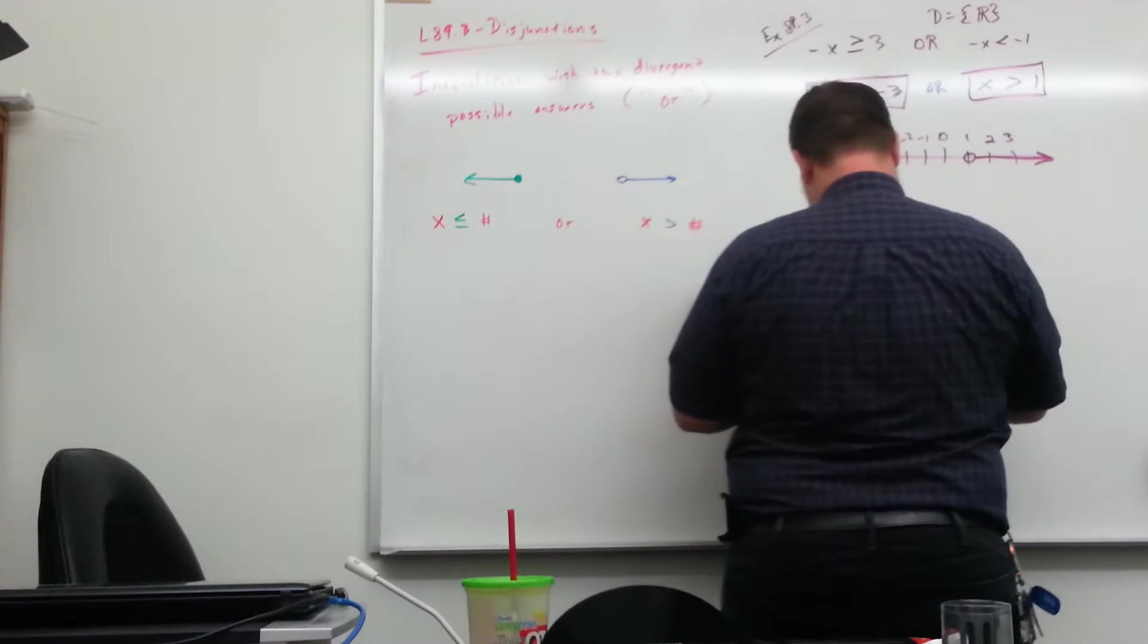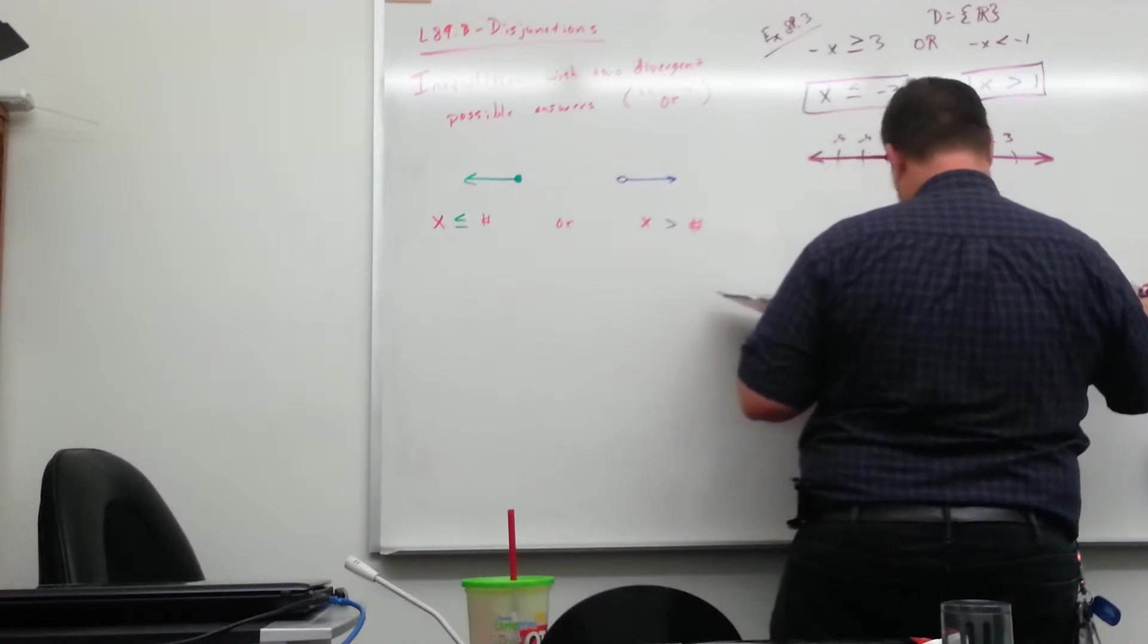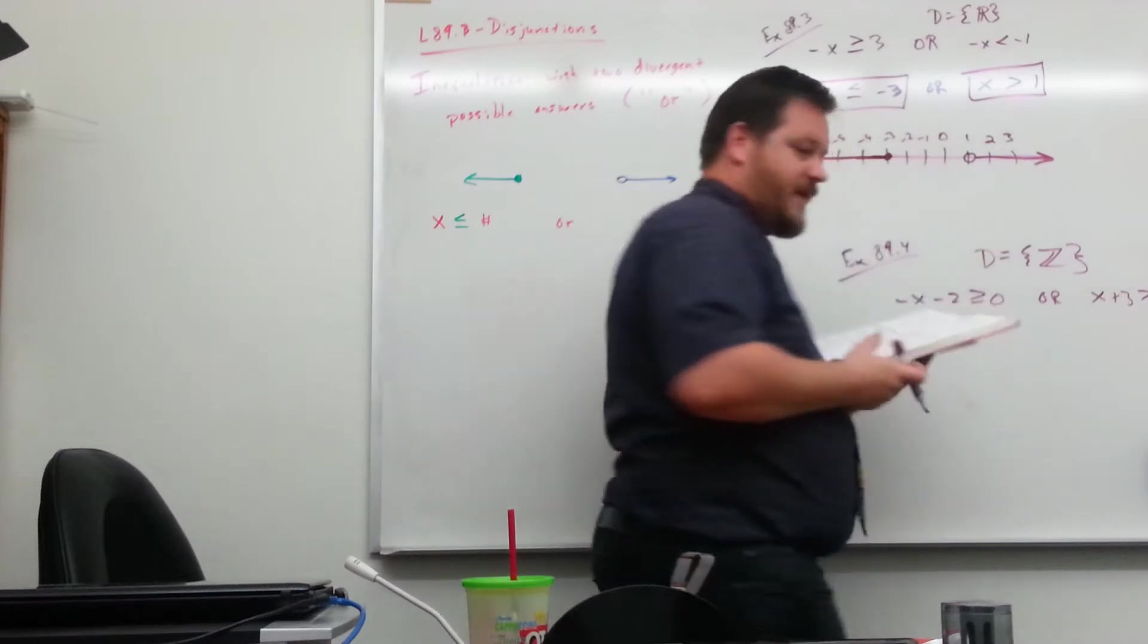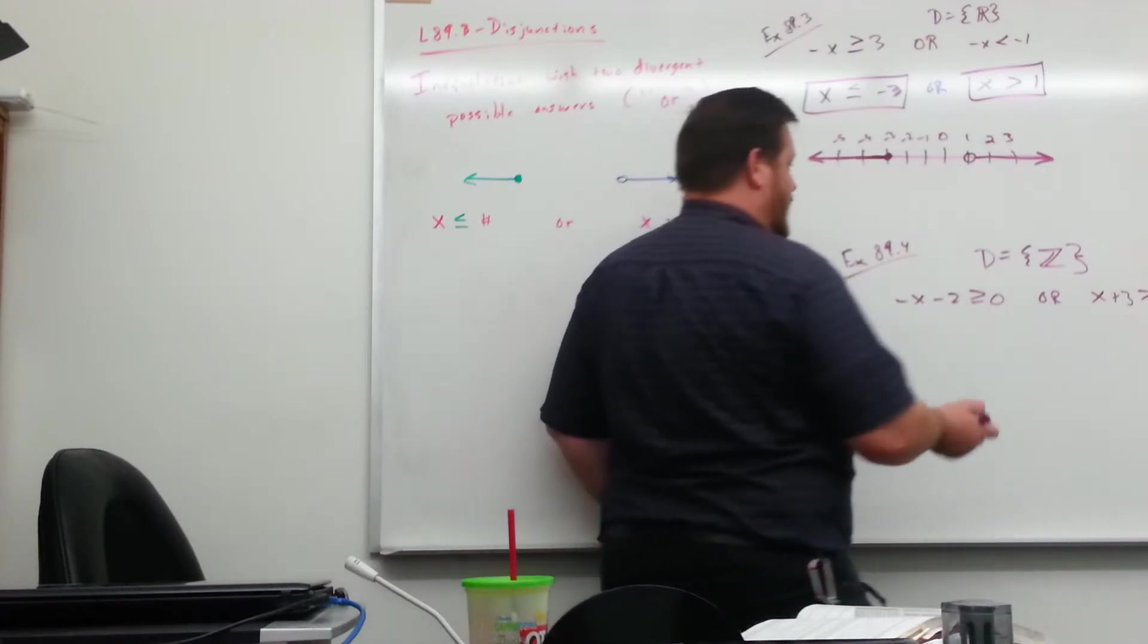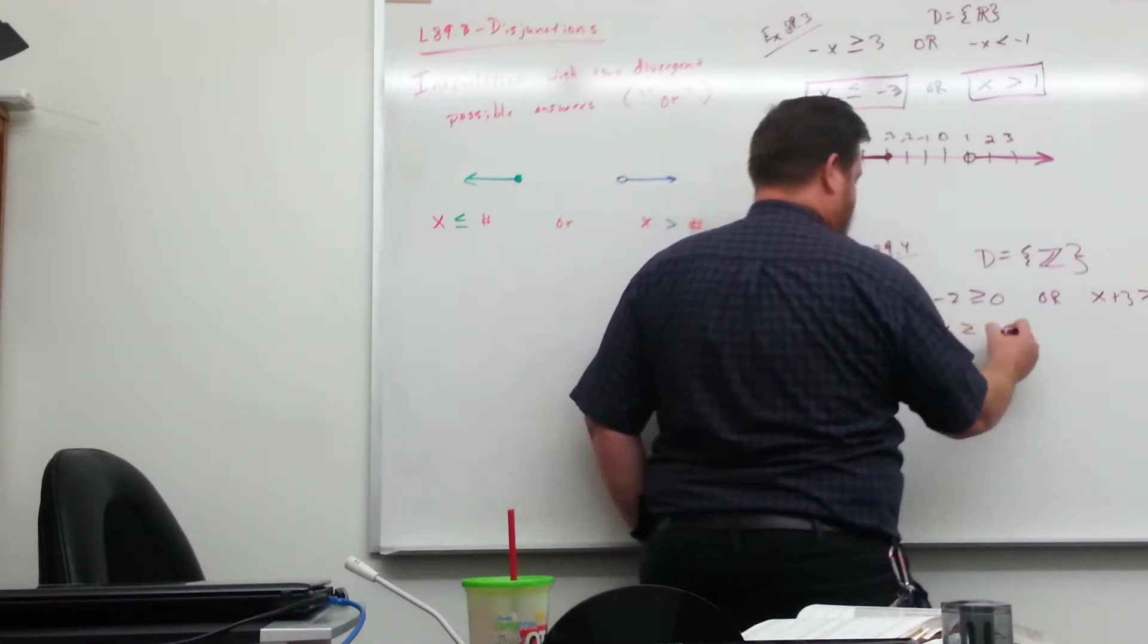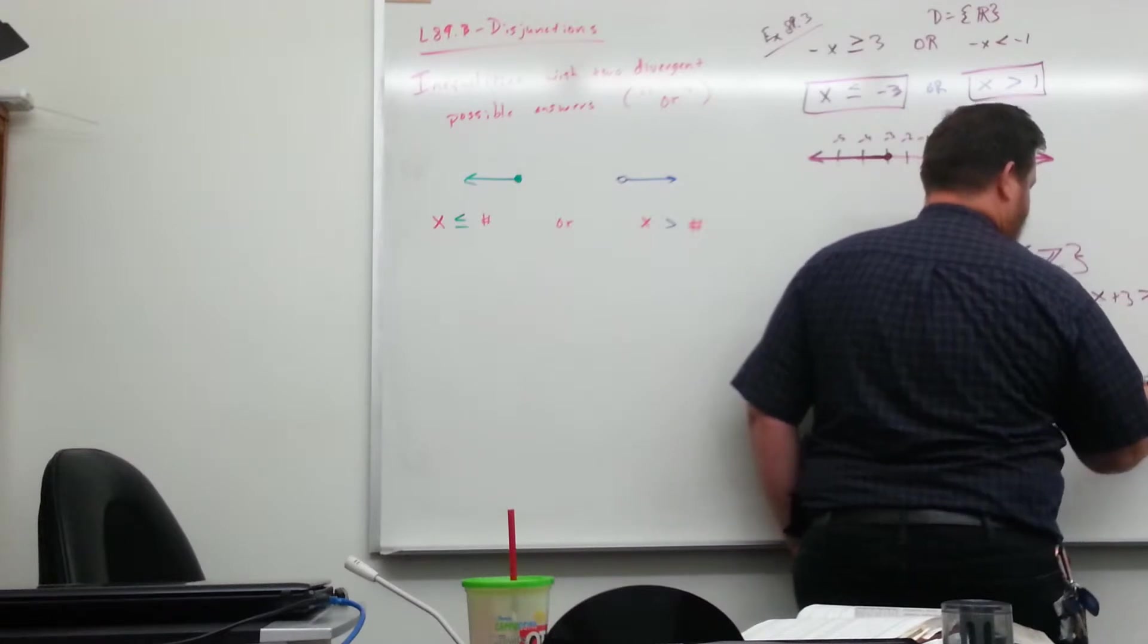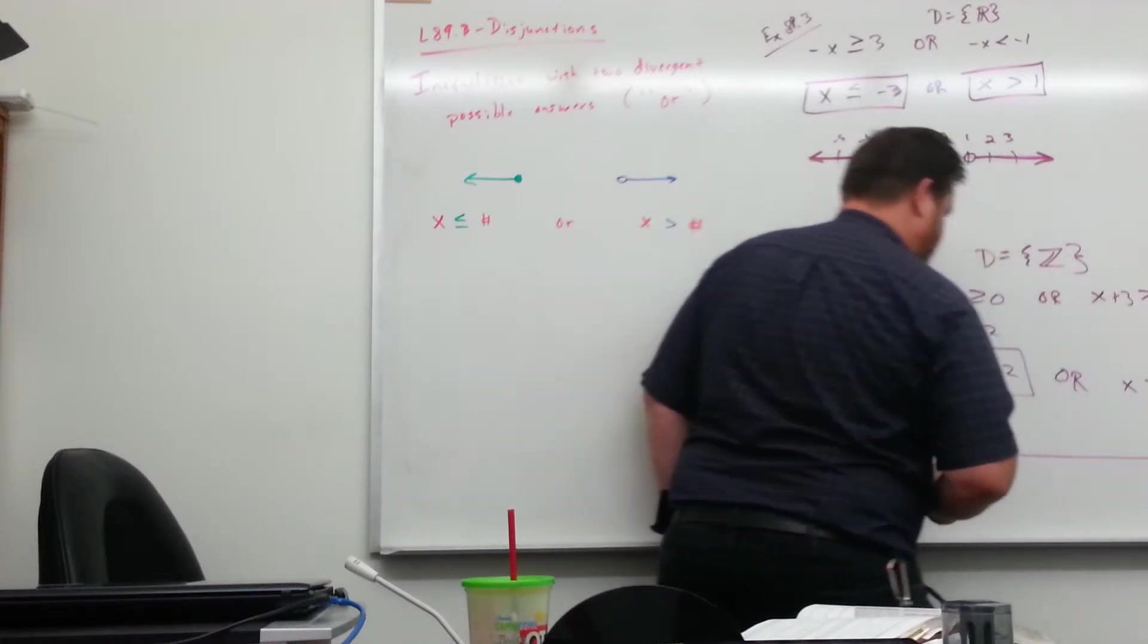All right, so 89.4. We've got negative x minus 2 is greater than or equal to 0, or x plus 3 is greater than 6. That's a 6. And my domain is integers. Basically, a Z with a double line there, that's the symbol for integers. All right, so just like with all the rest of these inequality things, I have to get it so I've got x, inequality symbol, everything else. I'm going to add 2 to both sides, multiply both sides by negative 1. Flip the side, change the direction. Or in this case, I'm going to subtract 3 from both sides. So I have to graph this or all things going to match this one. So I need a number line.